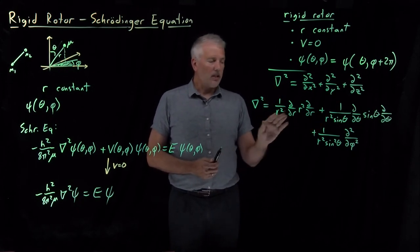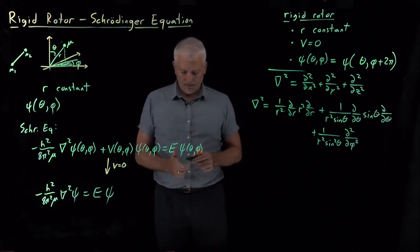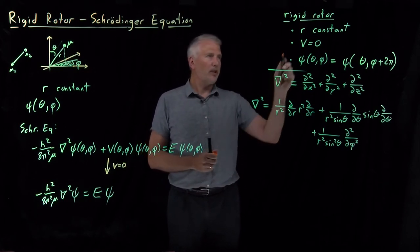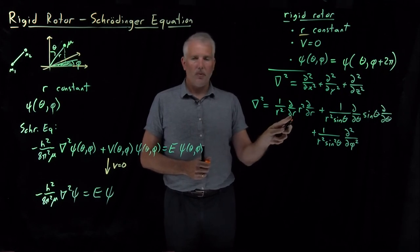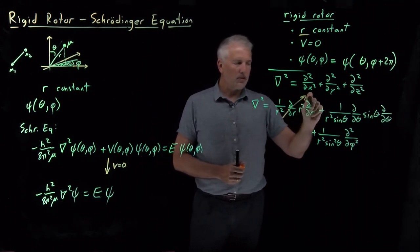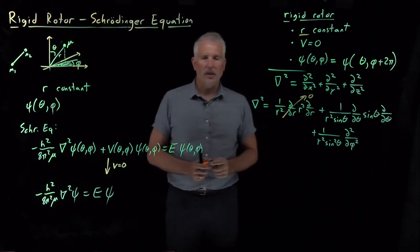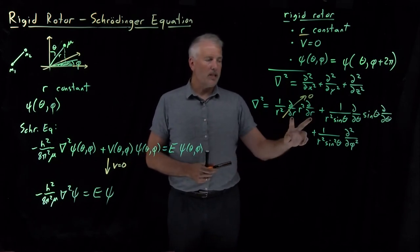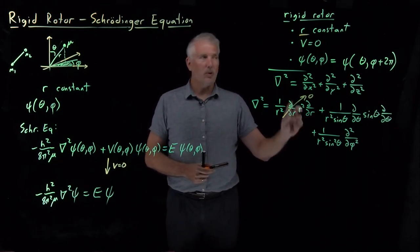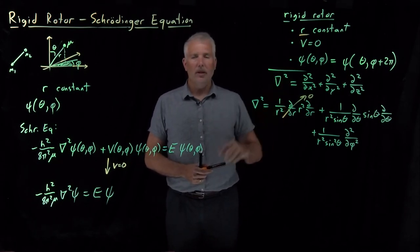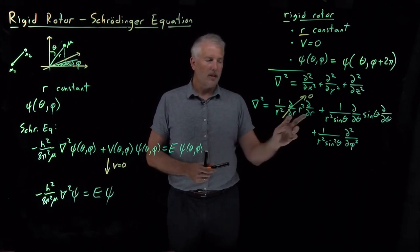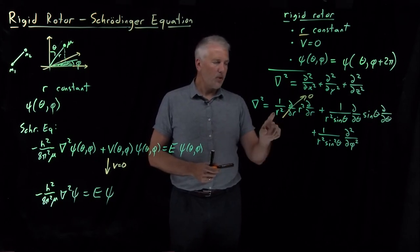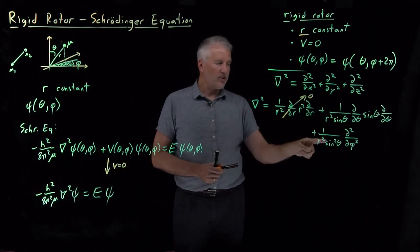Since we've assumed r is constant, the derivative terms with respect to r go to zero — the bond length can't change, so it has no derivative. We're left with just the theta and phi terms from the Laplacian.